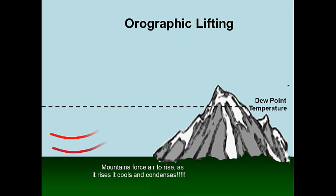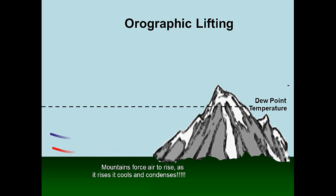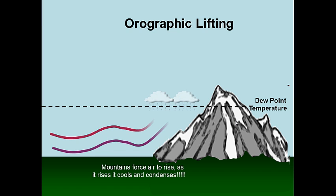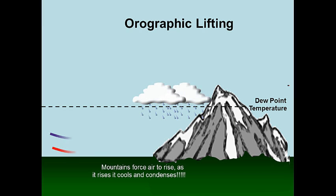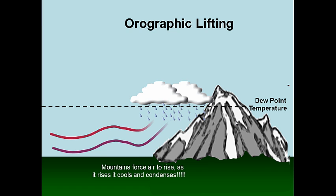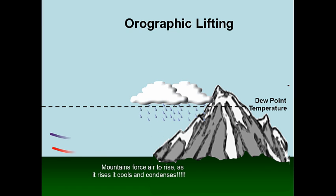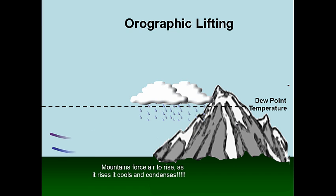The next one is orographic lifting. Mountains force air to rise, and as it rises it cools and condenses. Once it hits that dew point temperature, we get clouds. So orographic lifting means mountains cause air to rise.